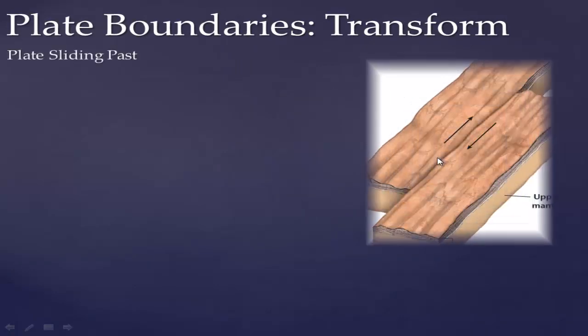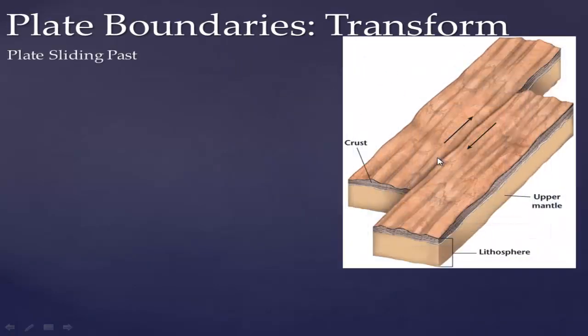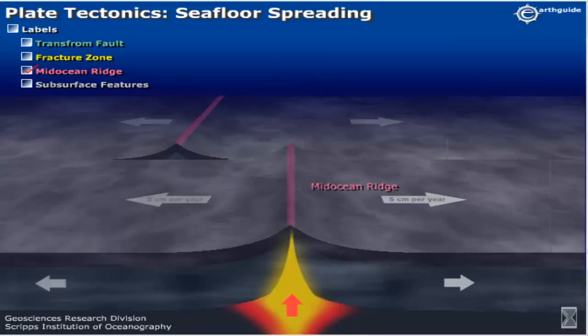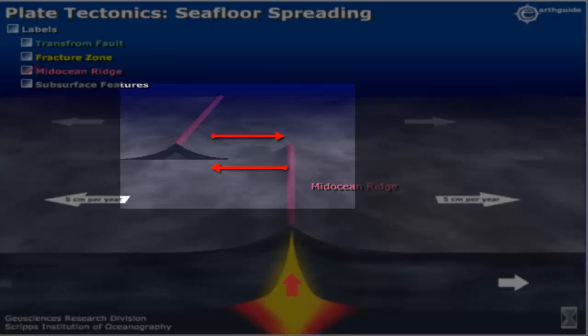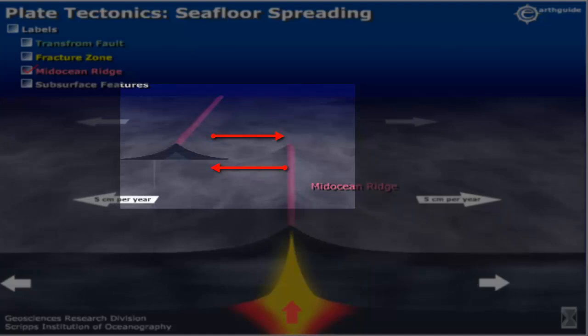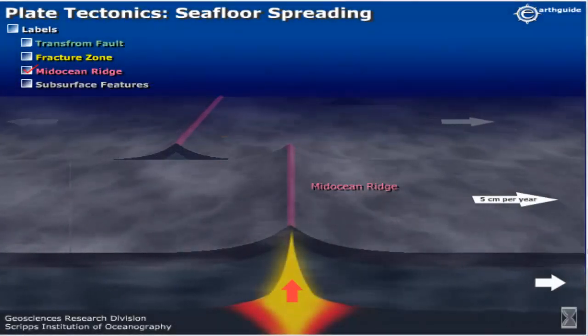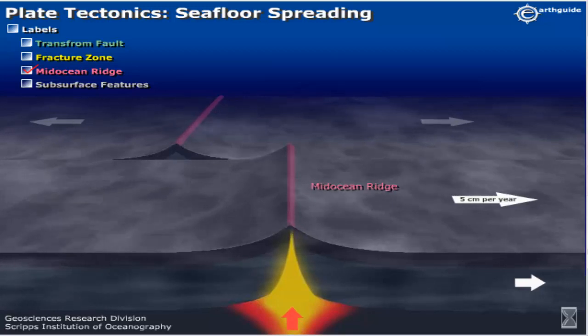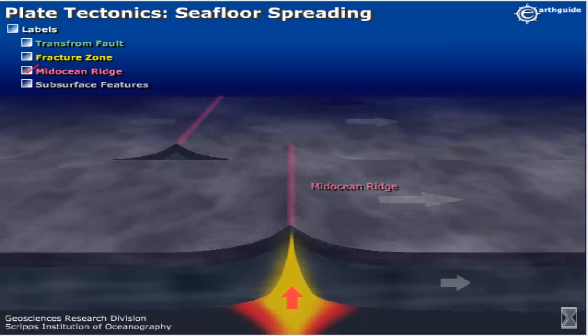The last boundary type is a transform boundary, where plates don't push into each other or pull apart but just grind past one another. The best example is the San Andreas Fault. Transform boundaries also occur along the mid-ocean ridge — the ridge isn't a continuous line; it sidesteps every once in a while, and where plates move in opposite directions those segments form transform boundaries.